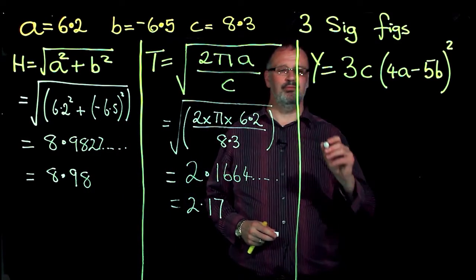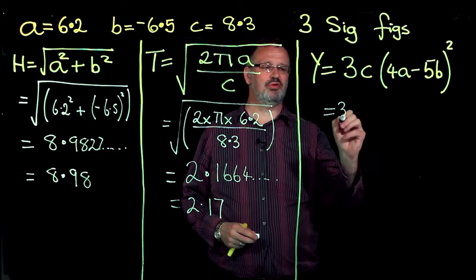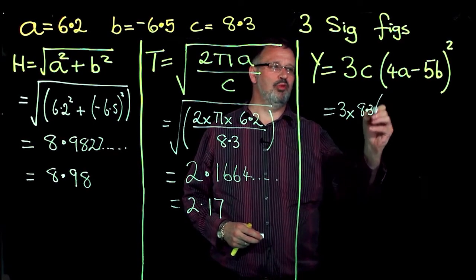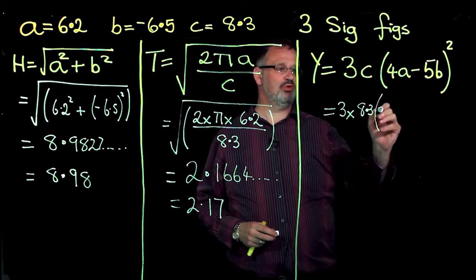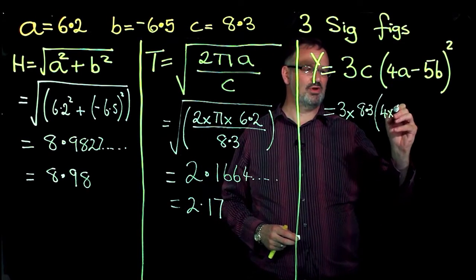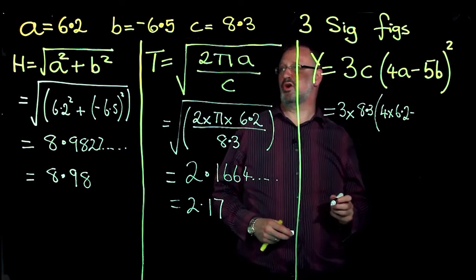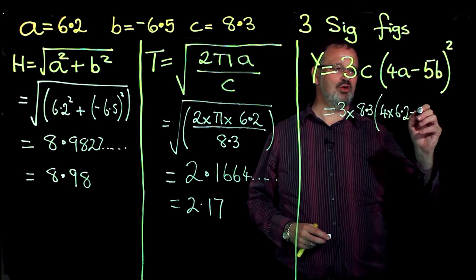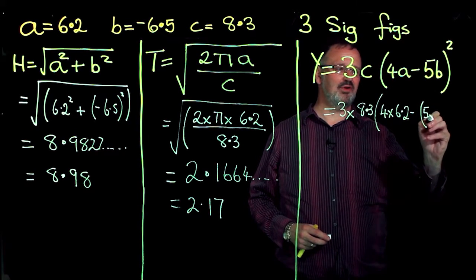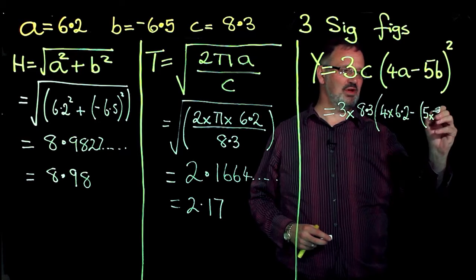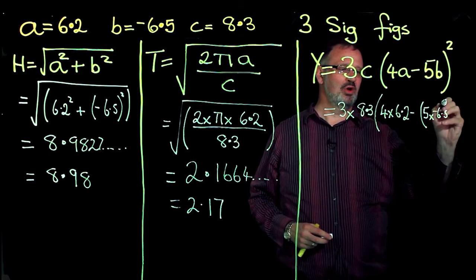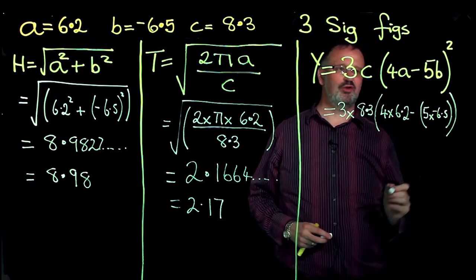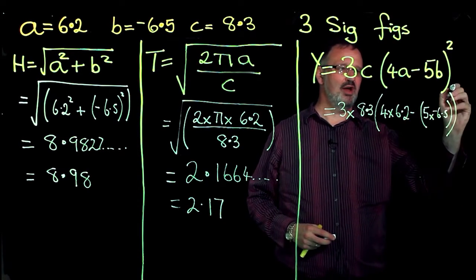For my last one here, Y equals 3 times the value of C, which is 8.3, brackets, 4a, which is going to be 4 times 6.2, take away 5b. Now, b again is negative, so I'm going to do take away brackets 5 times negative 6.5, close the brackets for this part of the calculation, close the brackets for the whole of what's here, and then do my square.